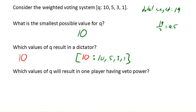What about 11? Will 11 still make player 1 a dictator? No, because at this point player 1 cannot reach the quota all by themselves. So the only value for the quota that will result in a dictator is a quota of 10.